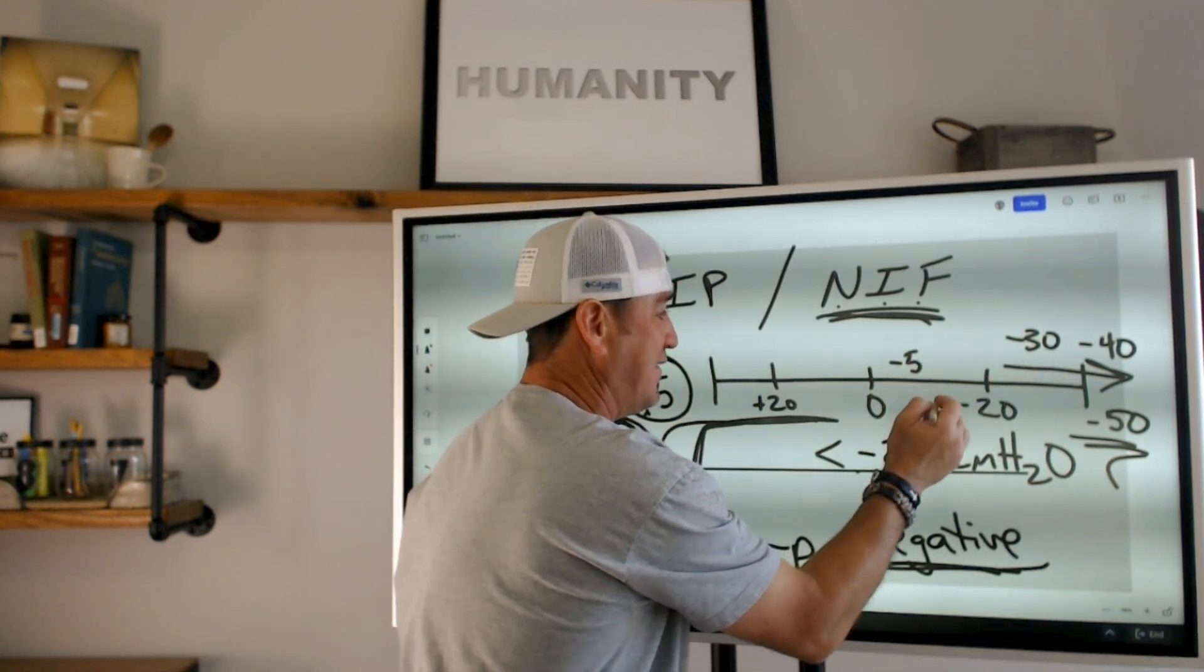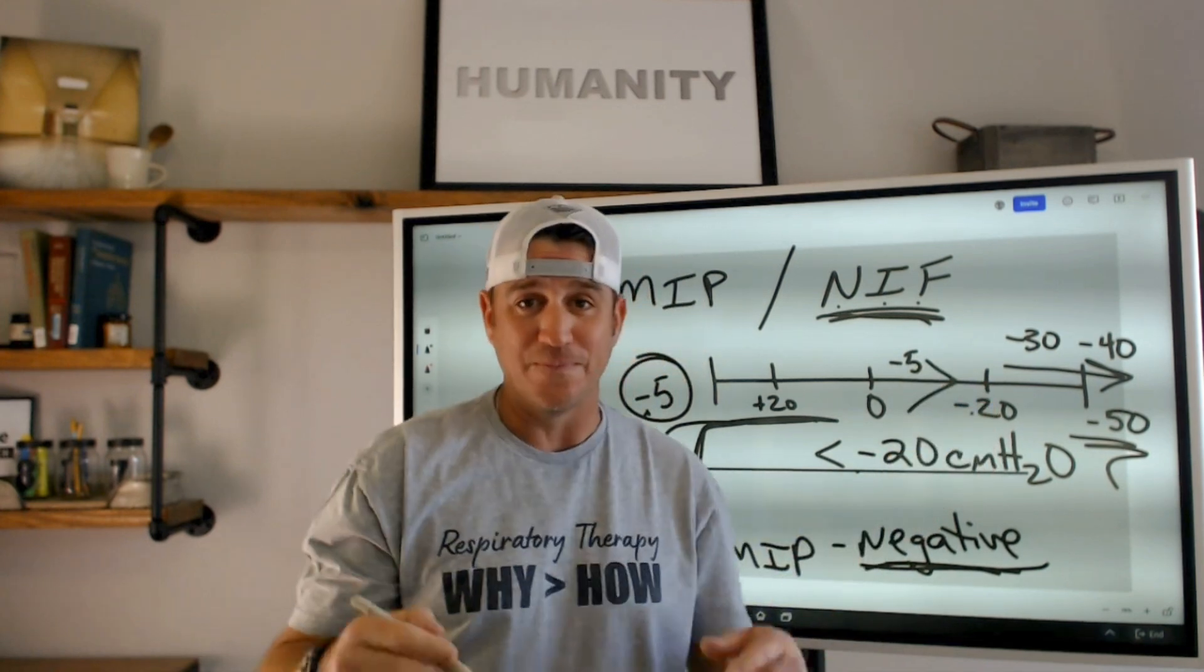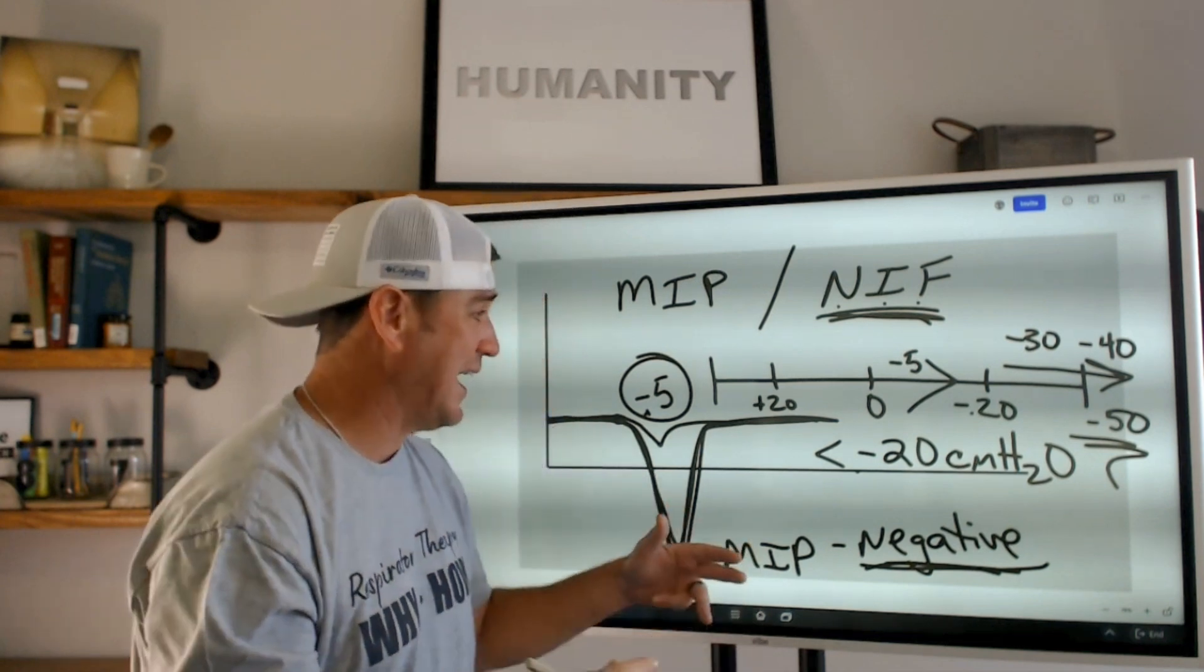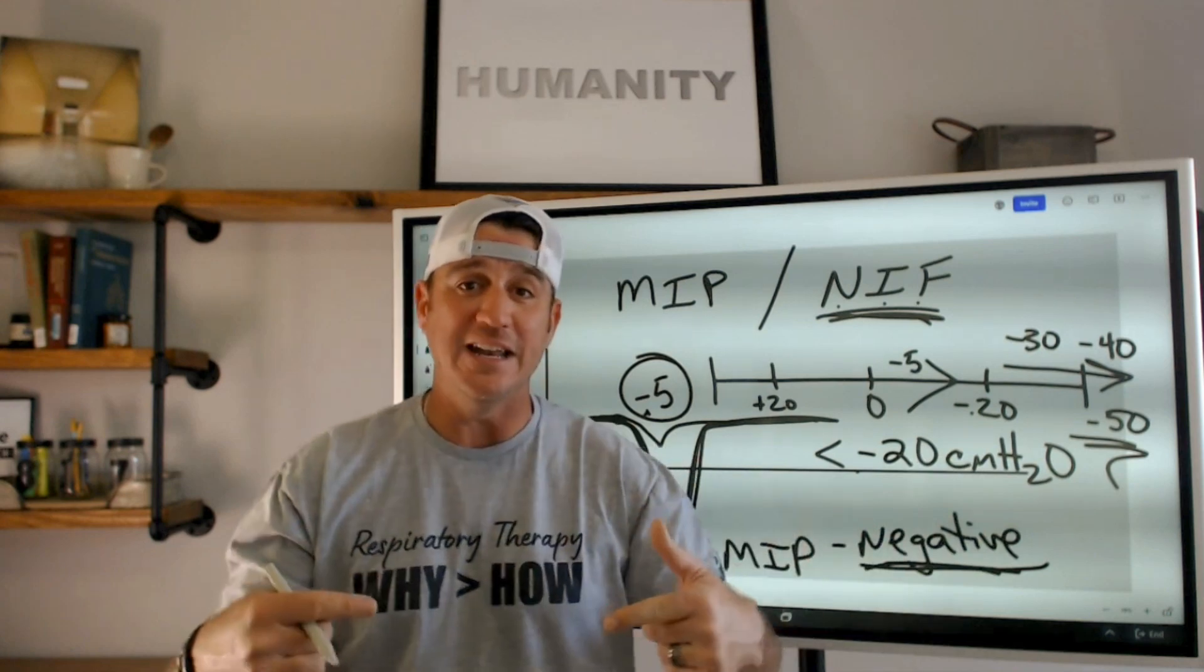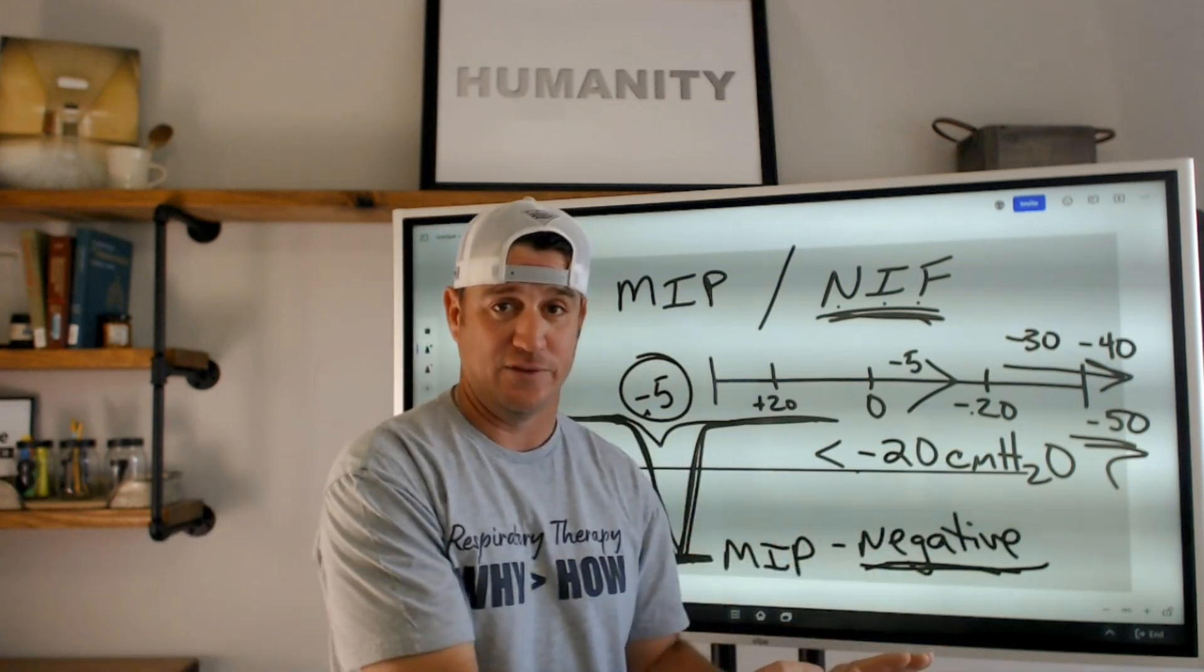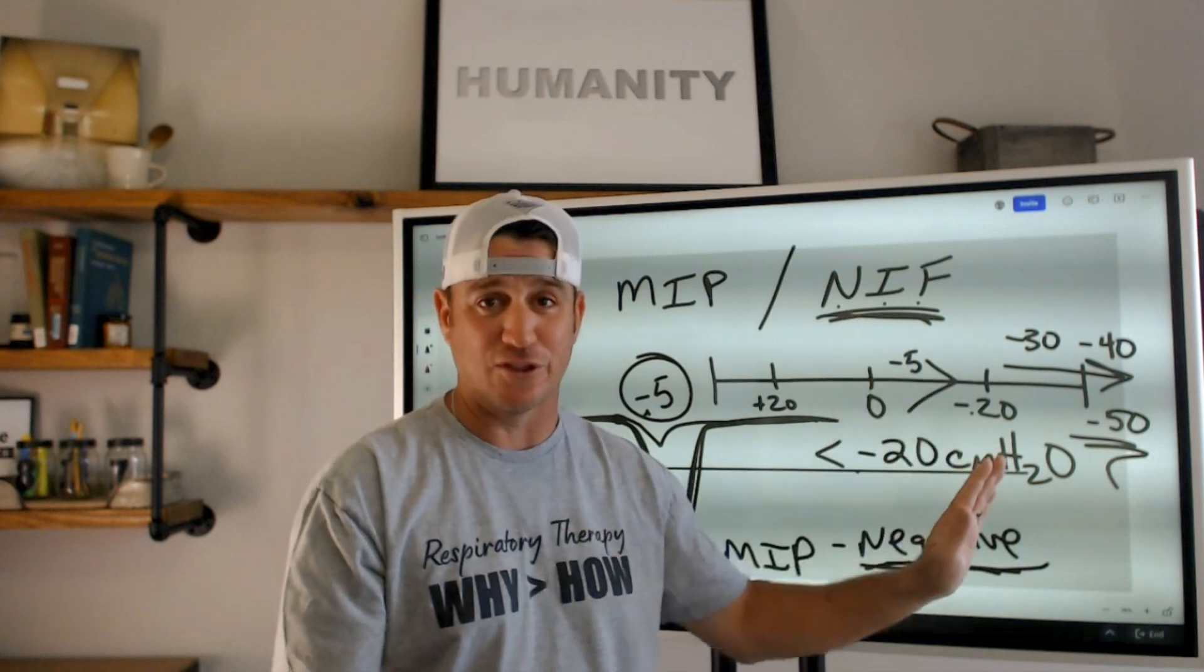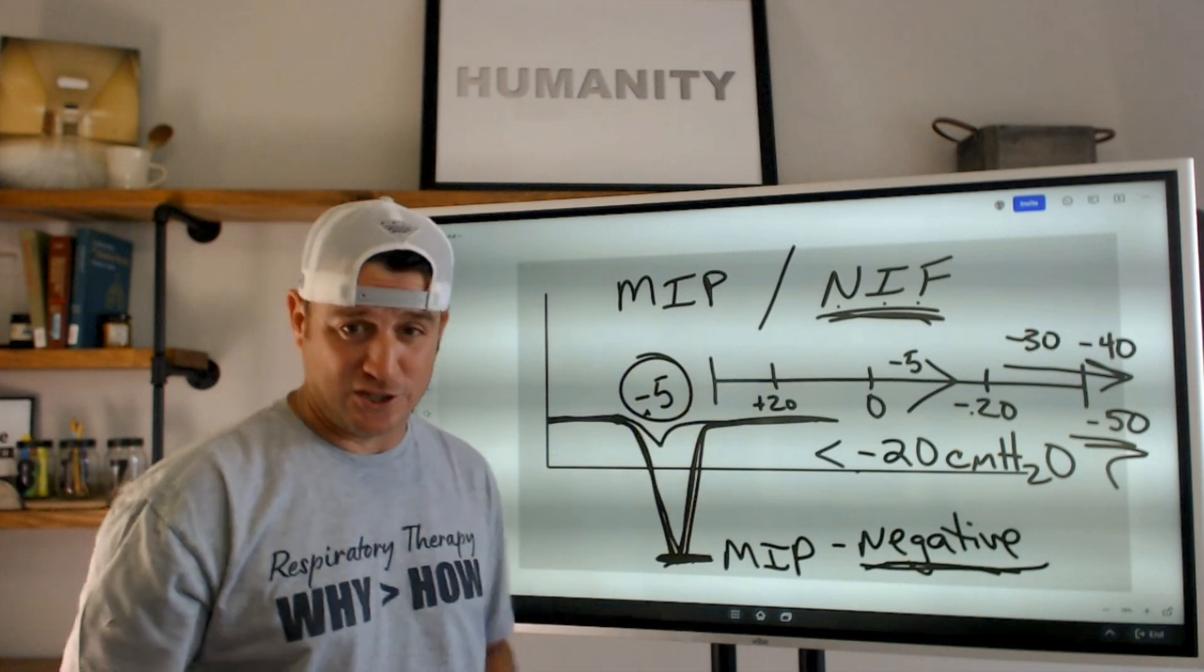If it's negative five, see, that's actually greater than negative 20. It gets real complicated when you put things on a negative scale, but we realized that we want it to be less than negative 20 centimeters of water pressure, meaning more negative. So like I said, negative 22, negative 28, negative 30, negative 50. All of those are good. Negative five, not so good.